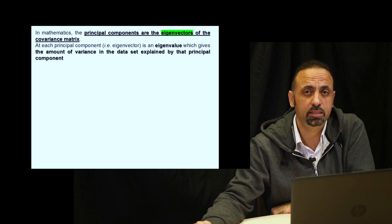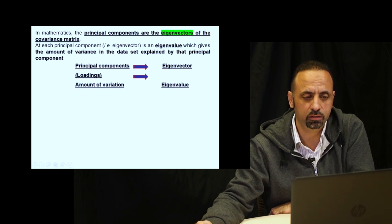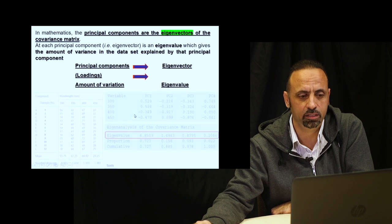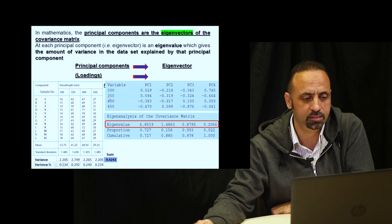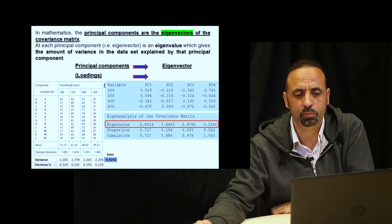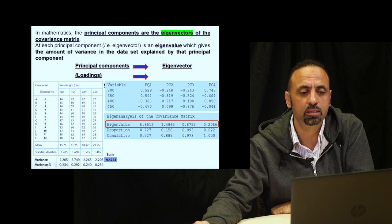In mathematics, this calculation is called eigenanalysis. The principal components are eigenvectors, and eigenvectors come from the covariance matrix of your data. The principal components are eigenvectors — also called loadings — and the amount of variation is the eigenvalue. Looking at our four-variable, 12-sample example, the eigenvalues tell us the variation captured by each principal component.